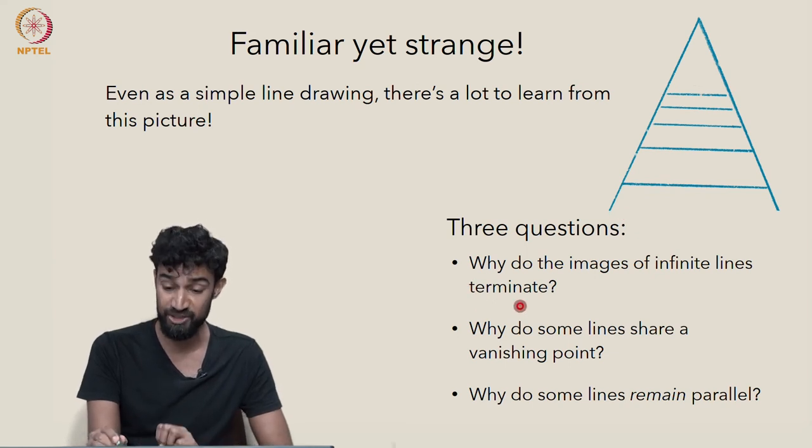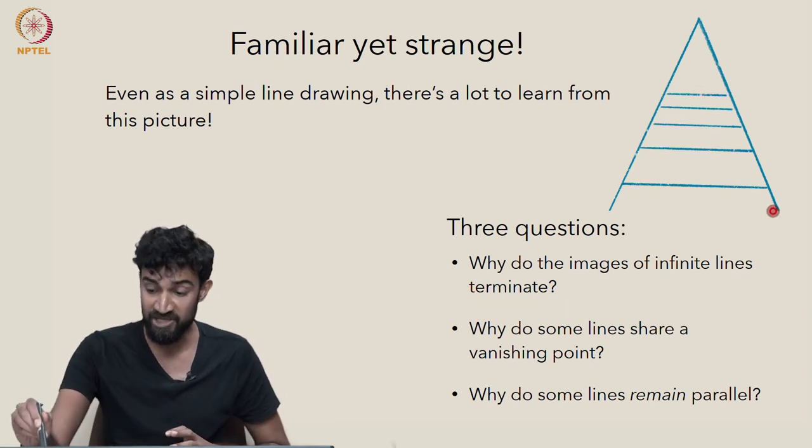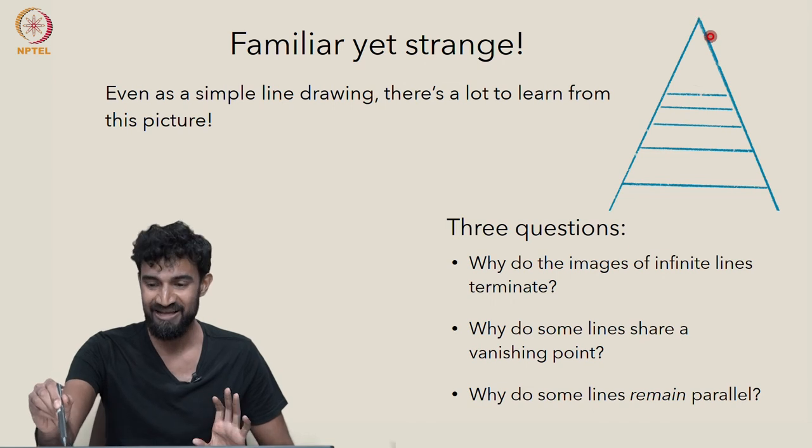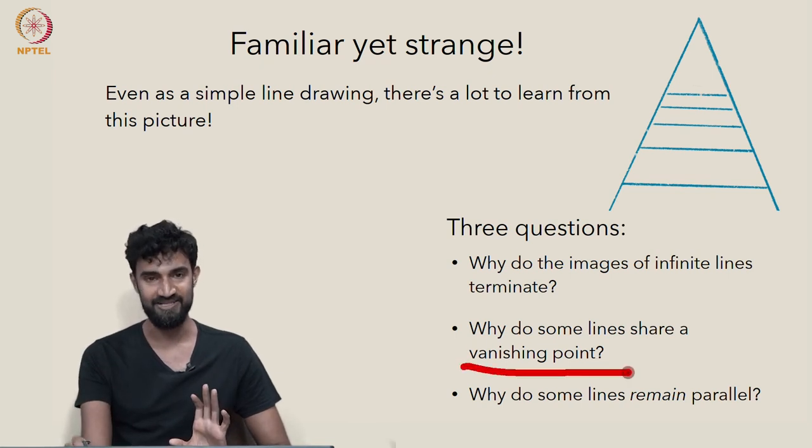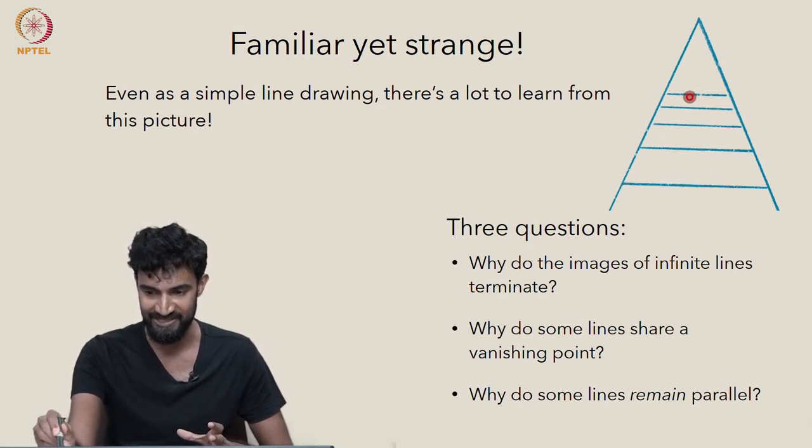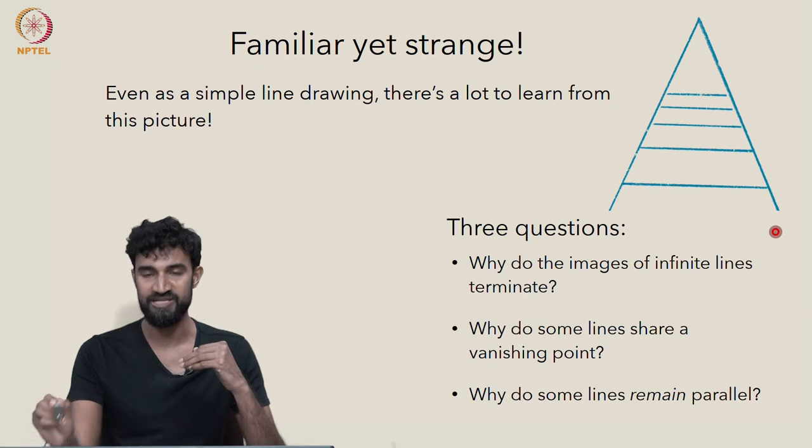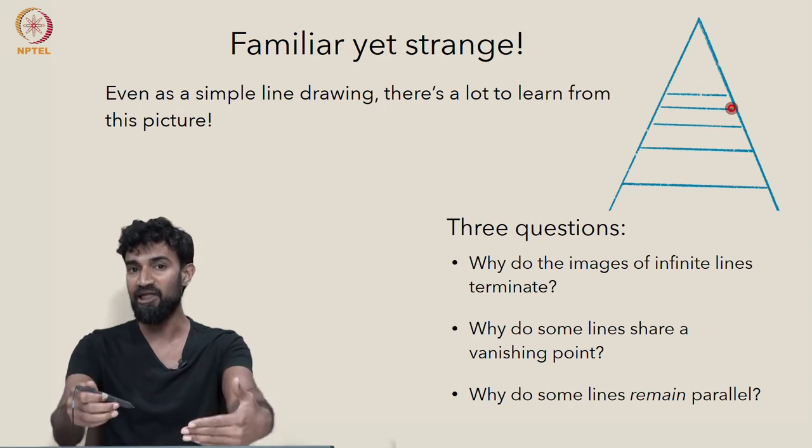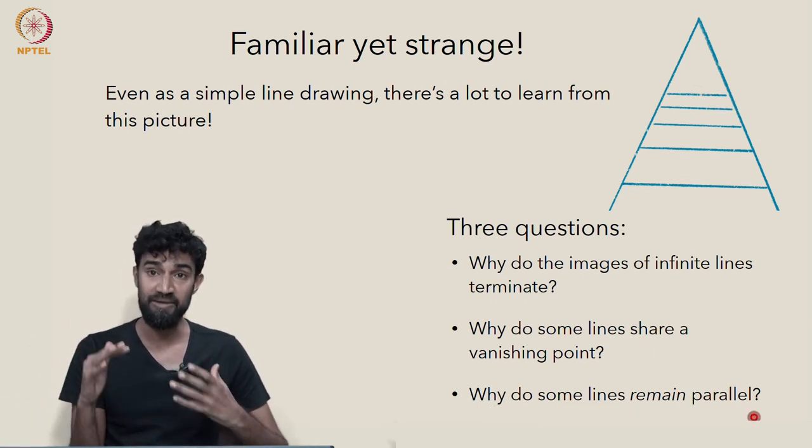So the first question that I want to look into a little more deeply is why do the images of infinite lines terminate? But beyond that, we also see that these two infinitely long lines, not only do they both terminate, but they both terminate at the same point. They share a vanishing point. So why is that the case? And there's a third feature which is also very interesting. This other family of parallel lines, which consists of these railway ties running in between the two side rails, they remain parallel in the picture plane. They're parallel in real life, but their images in the picture plane remain parallel. So why is that the case? Why do some lines remain parallel?